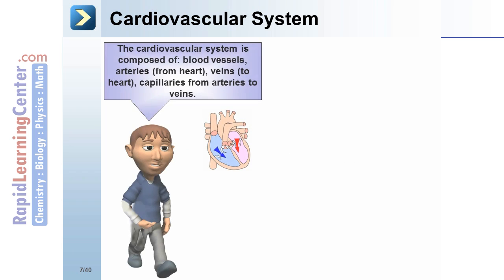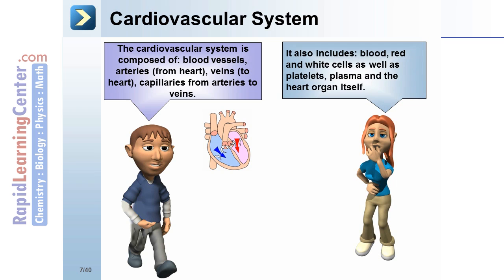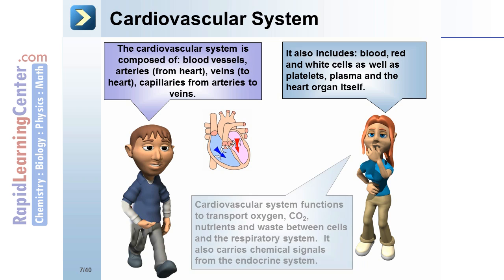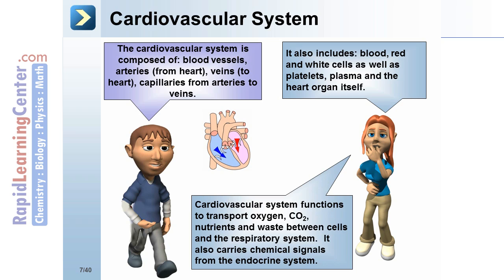Cardiovascular system: composed of blood vessels including arteries from the heart, veins to the heart, and capillaries from arteries to veins. It also includes blood — red and white cells, platelets, plasma — and the heart itself. It functions to transport oxygen, CO2, nutrients, and waste between cells and the respiratory system, and carries chemical signals from the endocrine system.